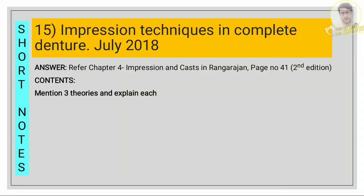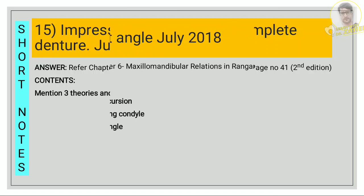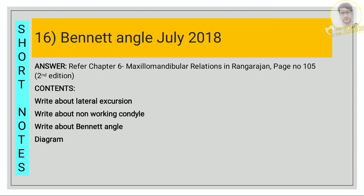Impression techniques in complete denture have already been discussed — refer chapter 4, page number 41. For the Bennett angle, refer chapter 6, maxillomandibular relations, page number 105. First write what is lateral excursion, then the two types of condyles seen during lateral excursion — the working and non-working condyle — write two lines about the non-working condyle, mention the Bennett angle, and draw a diagram.